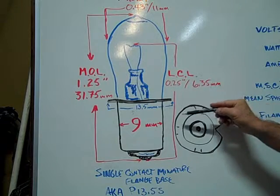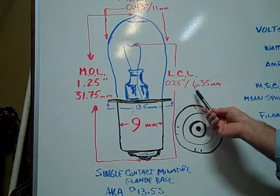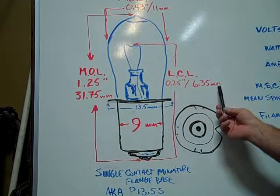The light center length is 0.25 inches or 6.35 millimeters.